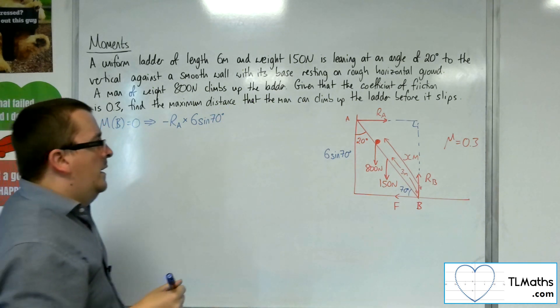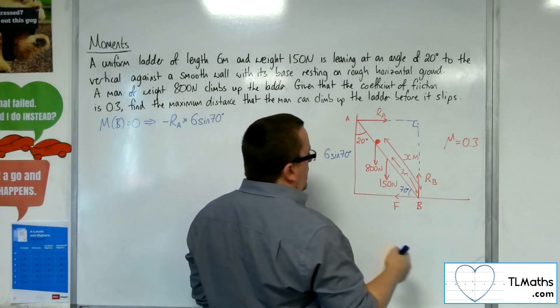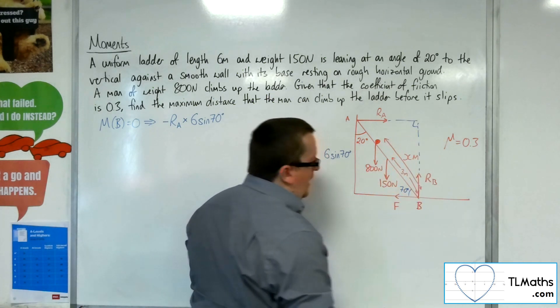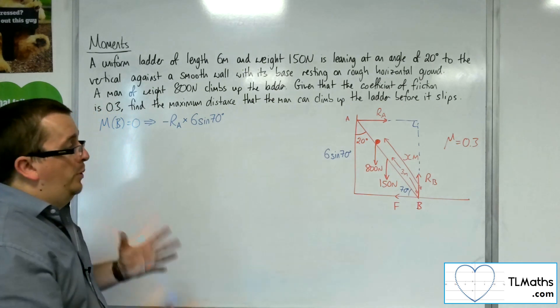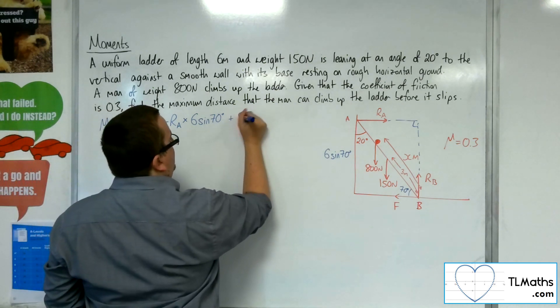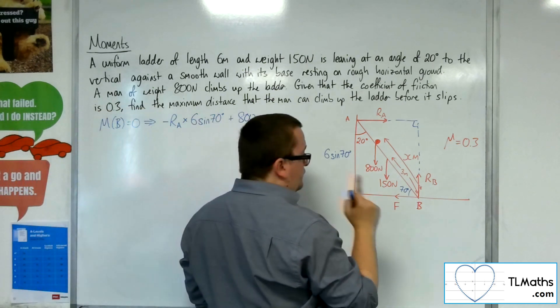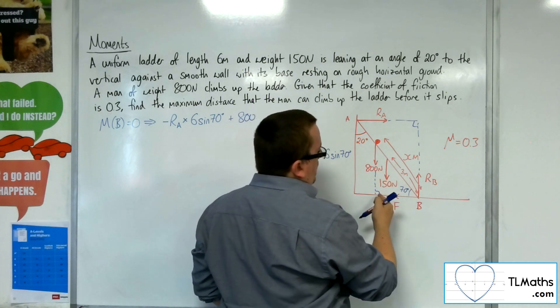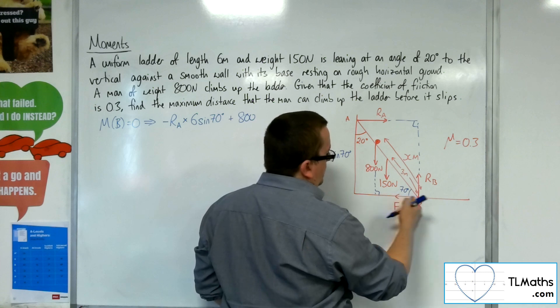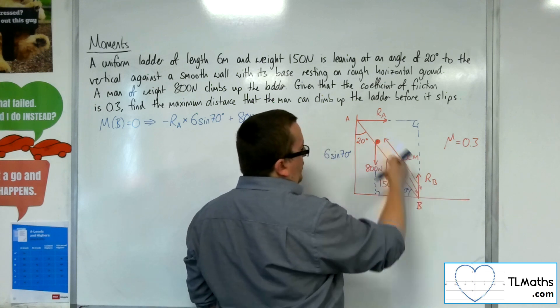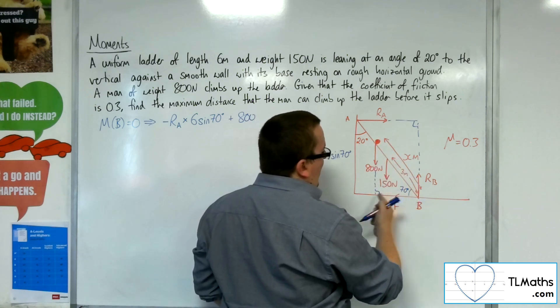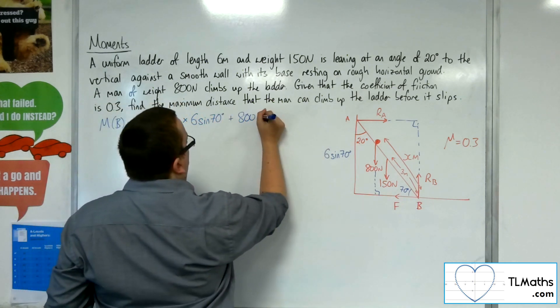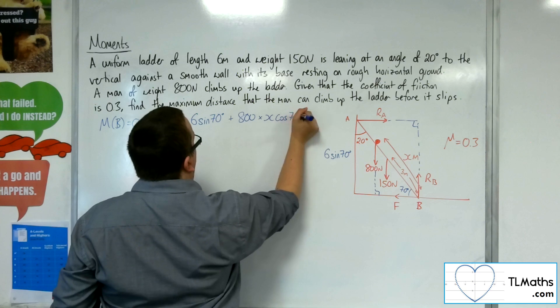What else have we got? Well, we've also got the 800 newtons, which is going around that way, so anticlockwise, and so that's positive. So plus 800. Now, distance-wise, that distance there. So if the hypotenuse is X, so that would be X cosine 70. So times X cosine 70.